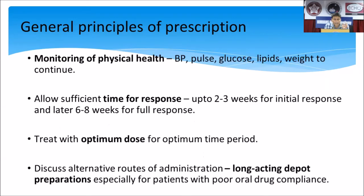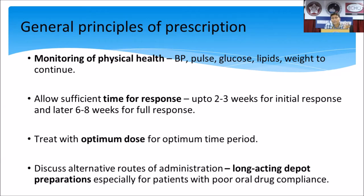When prescribing atypical antipsychotics, we need to monitor for metabolic side effects — they affect insulin pathways, cause hypercholesterolemia, and increase lipid levels. It is important to monitor body mass index, blood pressure, glucose, and lipid levels at each follow-up, at least once every three months. Also, allow sufficient time for the antipsychotic to respond. Some response is noticeable in the first two to three weeks, but it takes about six to eight weeks for a complete response. This rule of optimum dose for optimum duration applies before changing to the next drug.